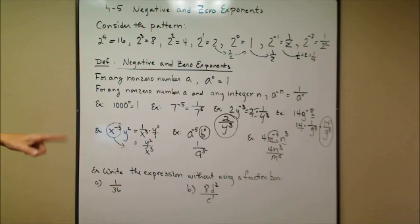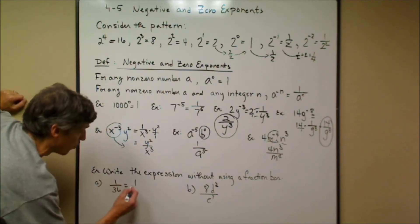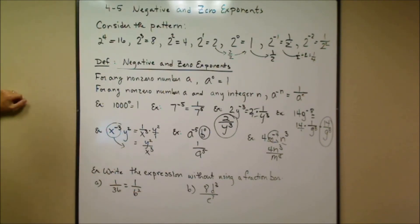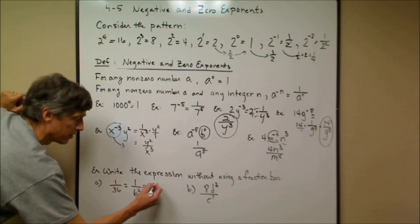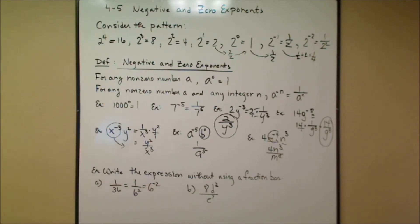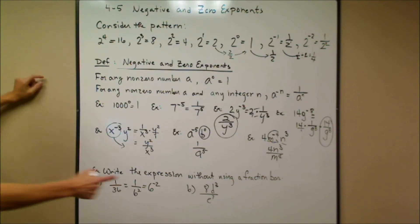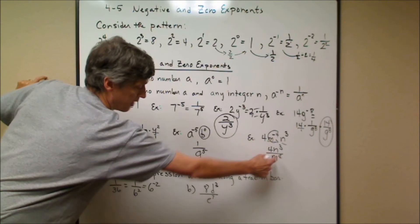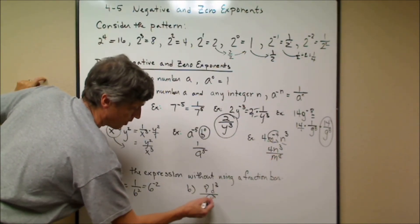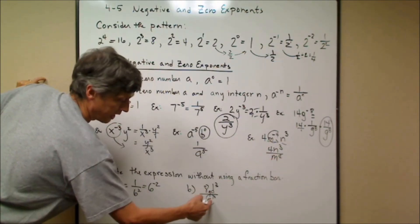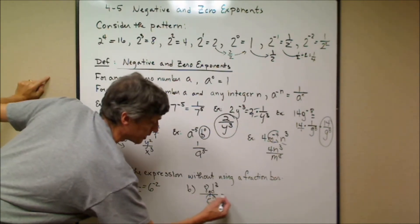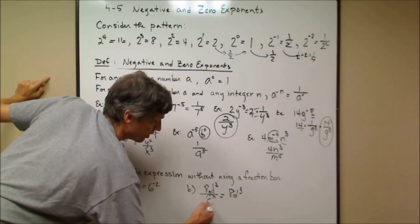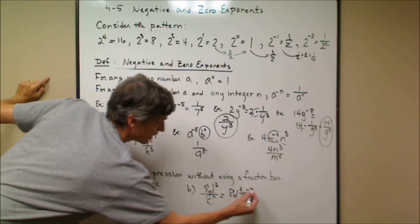In these last two examples, I'm writing expressions without a fraction bar by using negative exponents — reversing the process. 1 over 36 is the same as 1 over 6 squared, which I write as 6 to the negative 2. For the second expression, I bring the term from the denominator up above and change its exponent to negative, giving 8d^3 e^(−7).